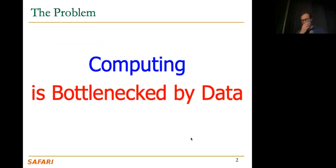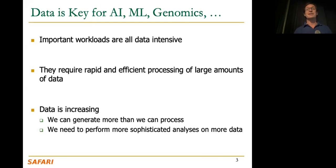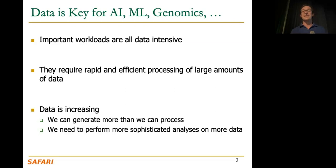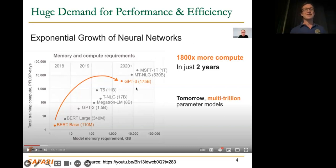The main issue is we're being overwhelmed by data today. Many important workloads are data-intensive and require rapid and efficient processing of data — and data is exploding. We're generating more data and need to perform more sophisticated analyses on it. An important workload, since we're talking about workloads, is neural networks, which are growing as you can see in current developments — GPT, different versions of it, large language models, etc.